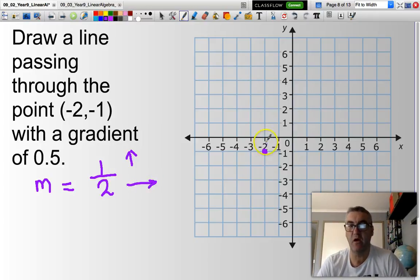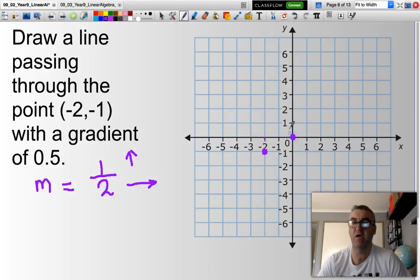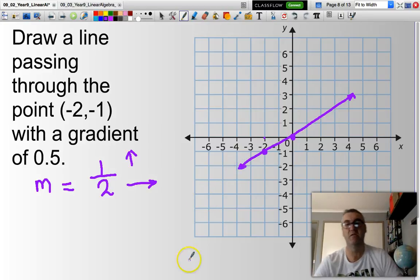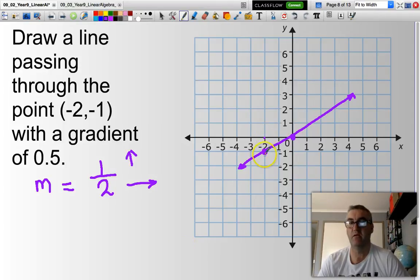So here I go up 1 to there, then across 1, 2. I have my 2 points. Now, I'm not going to use a ruler, but I could draw a straight line that goes through there. There you go. Arrowhead there. Arrowhead here. So that is a line passing through the point negative 2, negative 1 with a gradient of 0.5.